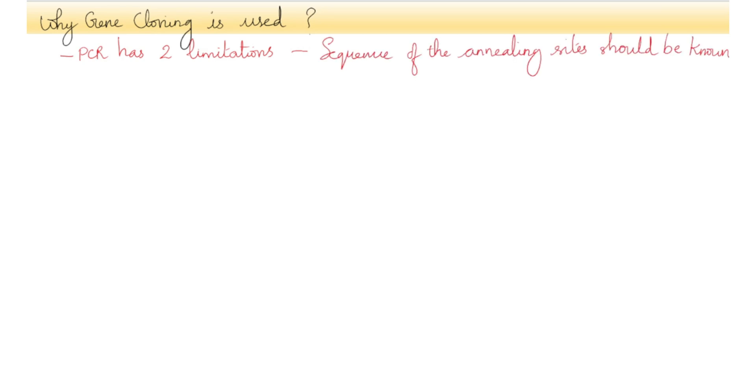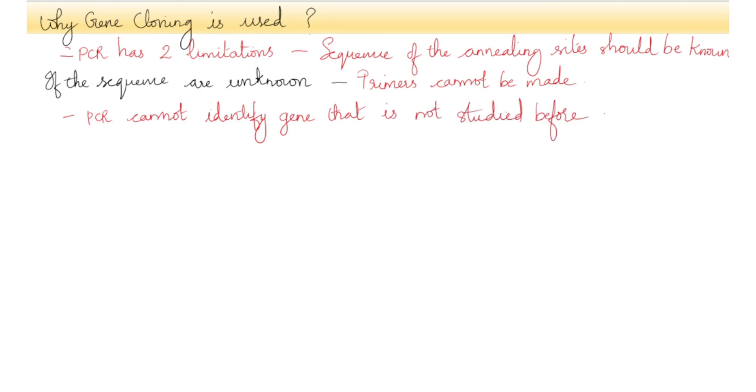Why then is gene cloning still used? It is because PCR has two limitations. In order for the primers to anneal to the correct positions either side of the gene of interest, the sequence of these annealing sites must be known. If the sequence of the annealing sites are unknown, then the appropriate primers cannot be made. This means PCR cannot be used to isolate genes that have not been studied before.